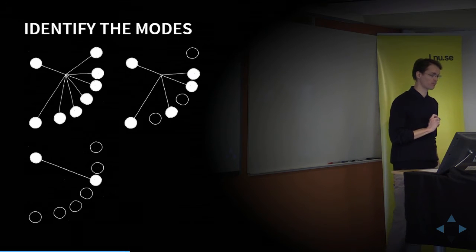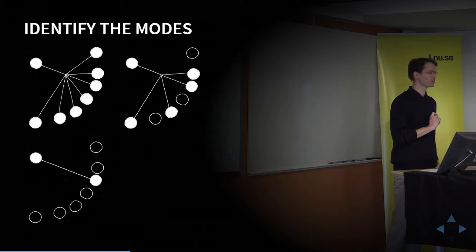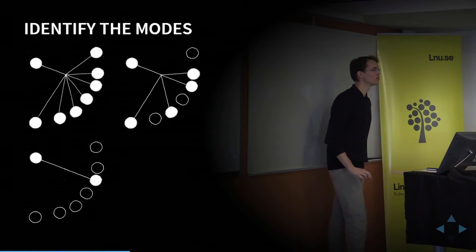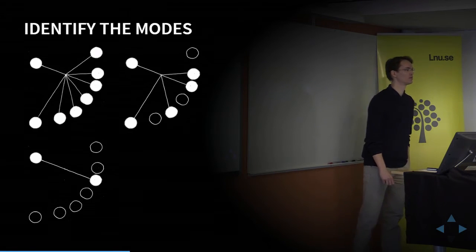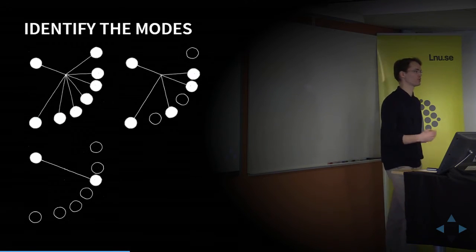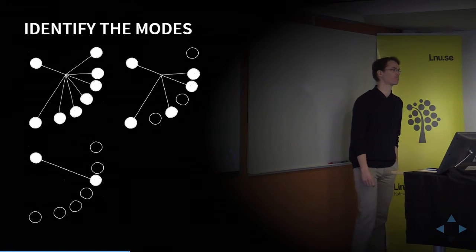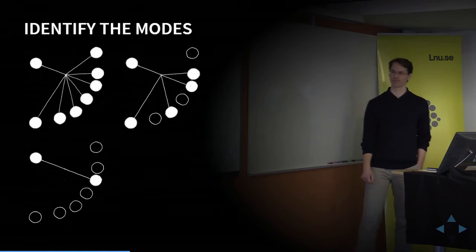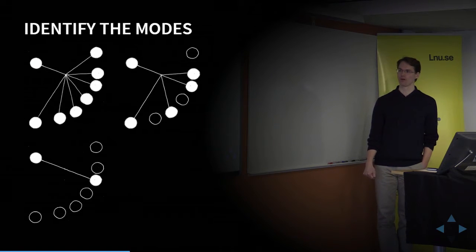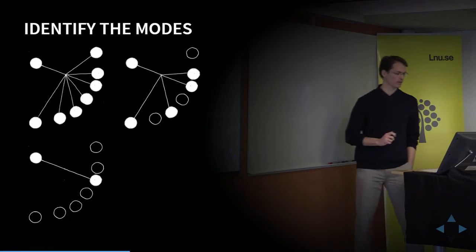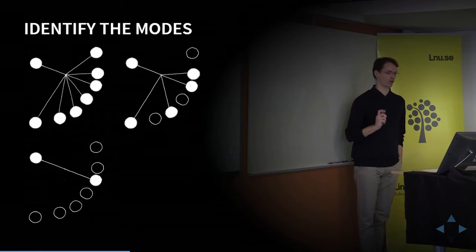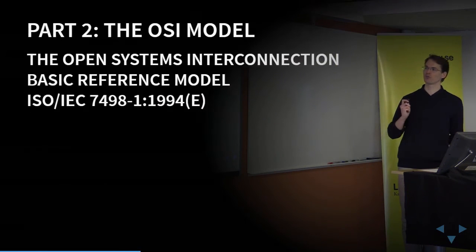And that's it for the first part. One question: with anycast, there's only one source and one destination, but you don't actually know the destination when you send the message? Exactly — there could be several possible destinations, but only one of them will receive the message. Good question. Then we are done with part one, and we move on to part two: the Open Systems Interconnection Basic Reference Model.